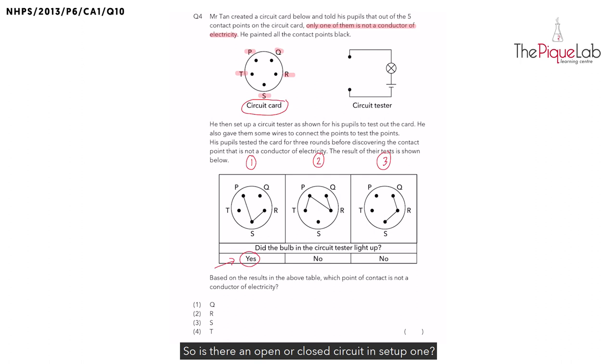So is there an open or closed circuit in setup 1? There is a closed circuit. Let us draw in the circuit tester so that we can better visualise this closed circuit. I'm going to draw in the circuit tester connected to points P and points R. Is electricity able to flow through these points? Yes, electricity is able to flow through points P, S and R, allowing the bulb to light up.